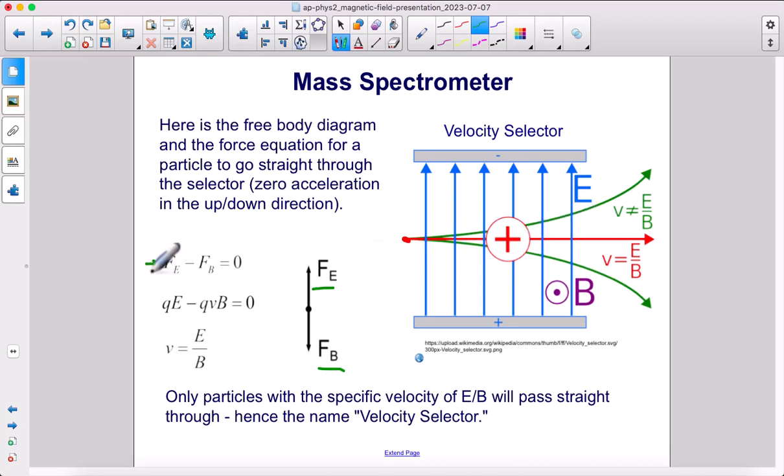So we have Newton's second law. We have the electric force is QE. That is an equation on your equation sheet. We know the magnetic force is QVB, also on your equation sheet. Set those equal to zero, because we don't want any acceleration up or down. No acceleration. And therefore, we can solve this for v. The velocity is E over B. Only particles with a very specific velocity, where the electric field divided by the magnetic field strength, will pass straight through. Hence, the name velocity selector.